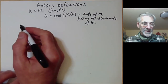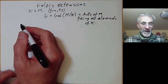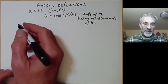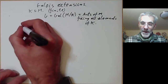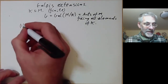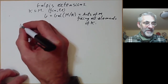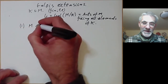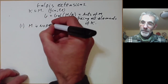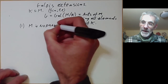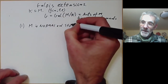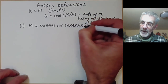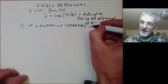What we're going to do now is write down five different conditions that the extension might satisfy. The first condition is that M is normal and separable over K.